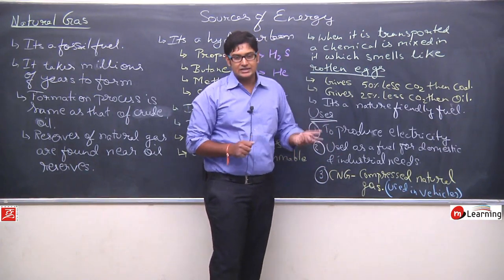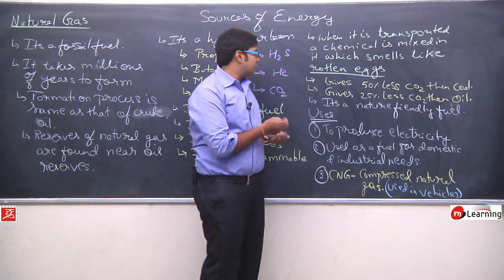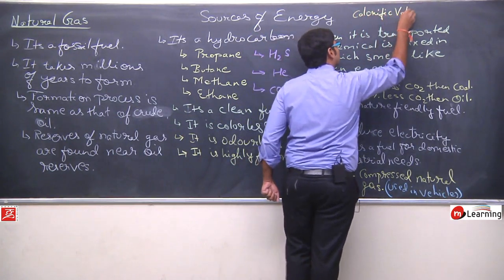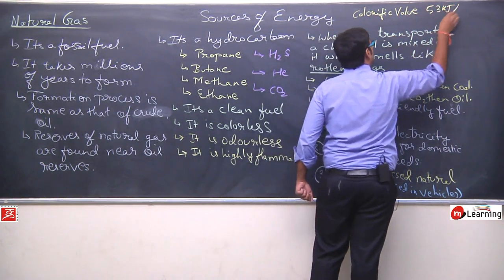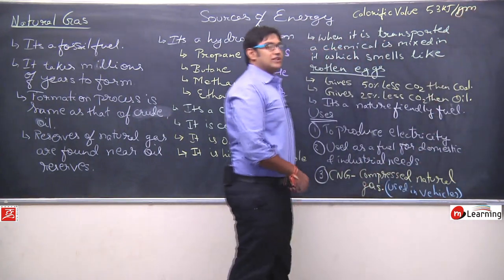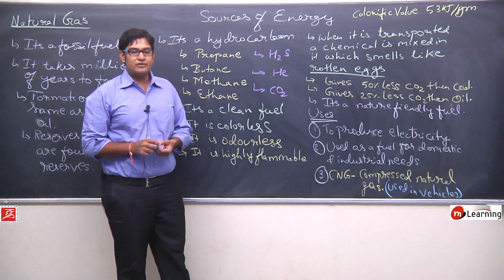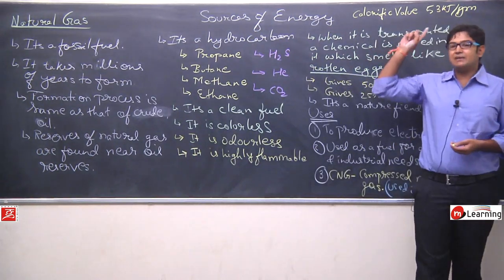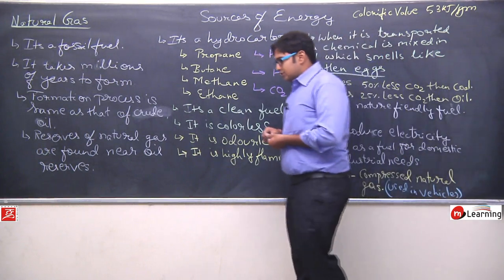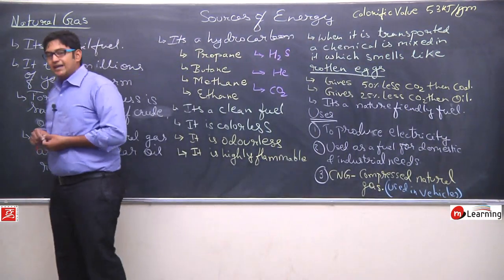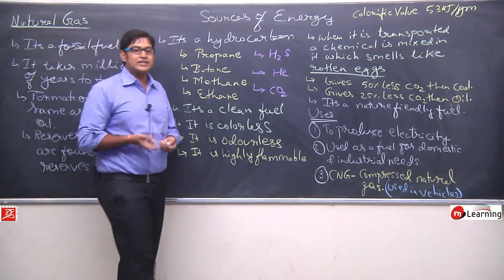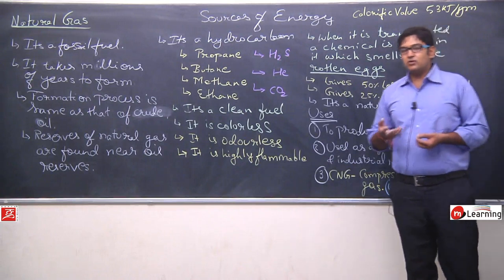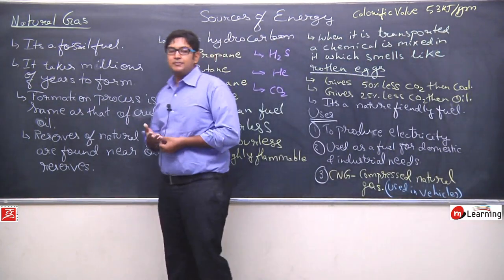This is a clean fuel, it creates almost negligible pollution. And its calorific value is around 53 kilojoules per gram. It means 1 gram if you burn natural gas, you will get 53 kilojoules of energy. In India, natural gas usage is less for domestic purposes also, but in foreign countries you will see that natural gas is generally used for cooking along with LPG.